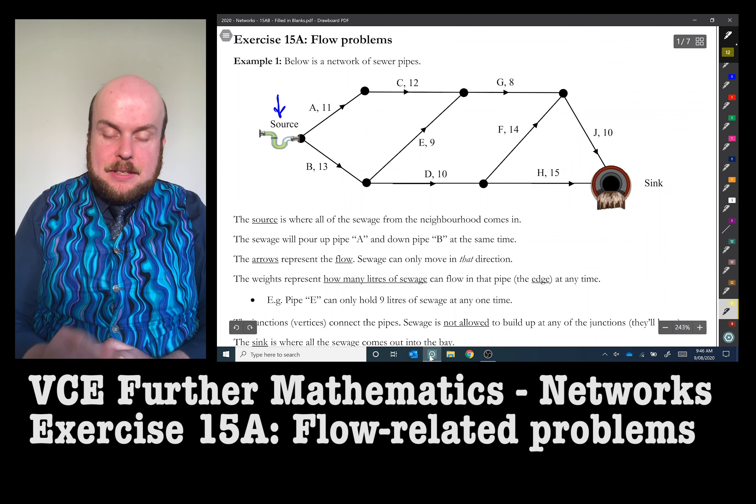Well, that flow is limited by whatever the smallest sized pipe is. In this case, it's that 8. So that means that if I let sewage flow through, only 8 liters can flow through here, because any more than that and this connection will burst. So I'm just going to write that only 8 out of the 11 liters can flow through here, and 8 out of 10.